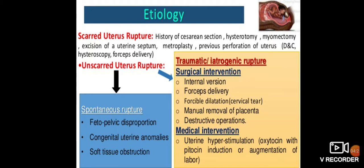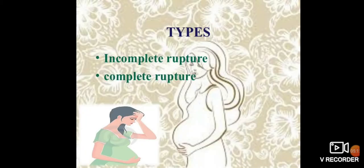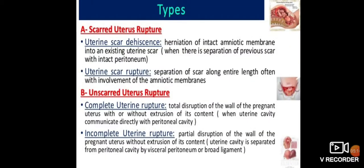For the scarred uterus, causes include: history of cesarean section, myomectomy, excision of uterine septum, metroplasty, previous perforation of the uterus, D&C, hysteroscopy, and forceps deliveries. The unscarred uterus is divided into traumatic/iatrogenic causes — including internal version, forcible dilatation, cervical tear, manual removal of placenta, and destructive operations — and medical causes such as uterine hyperstimulation with oxytocin or induction/augmentation of labor. Spontaneous rupture causes include fetopelvic disproportion and congenital uterine anomalies with soft tissue obstruction.